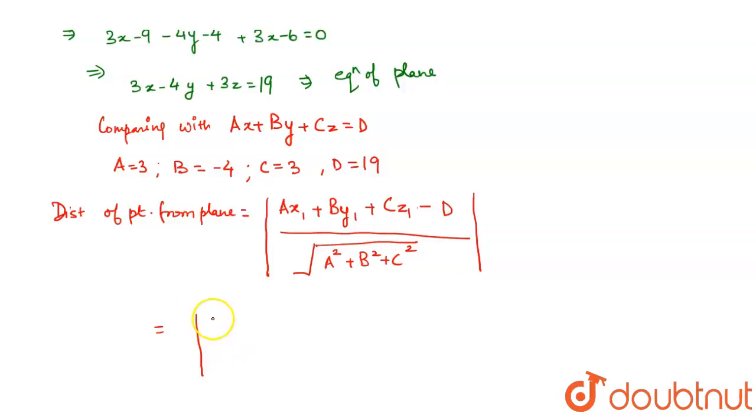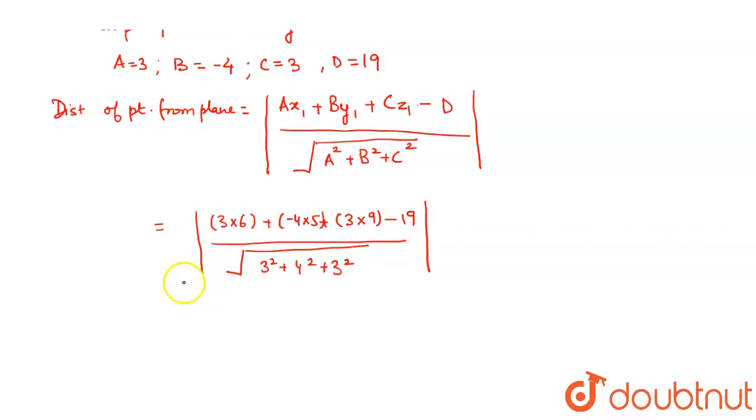So, just plug in the values over here. It will be |3×6+(-4)×5+3×9-19|/√(3²+4²+3²) in modulus. So, what is left over here?